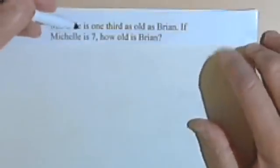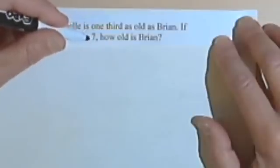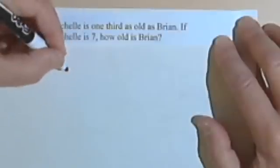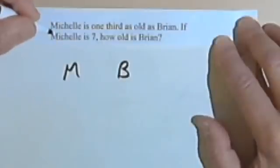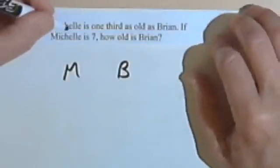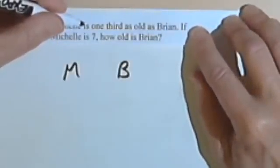Here's another one. Michelle is one-third as old as Brian. If Michelle is 7, how old is Brian? So I'm comparing Michelle's age and Brian's age, and Michelle is one-third as old as Brian.